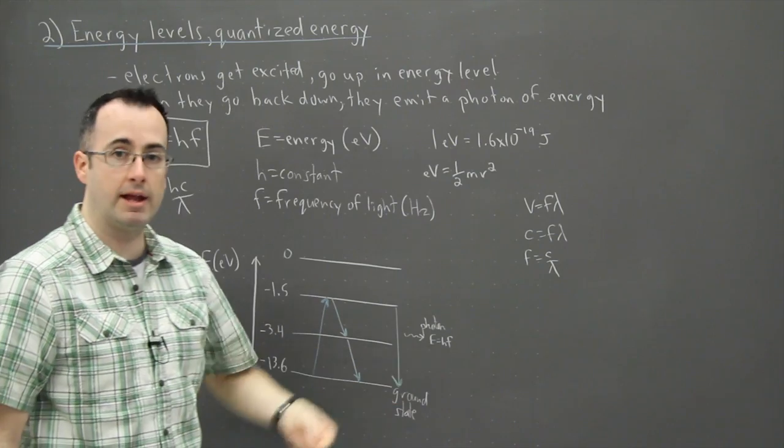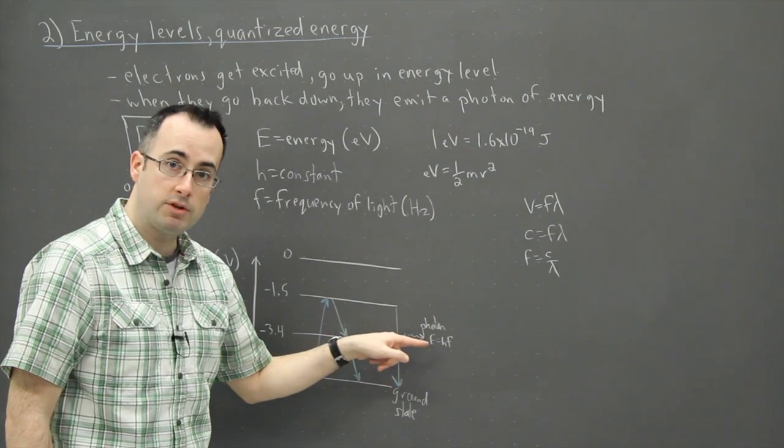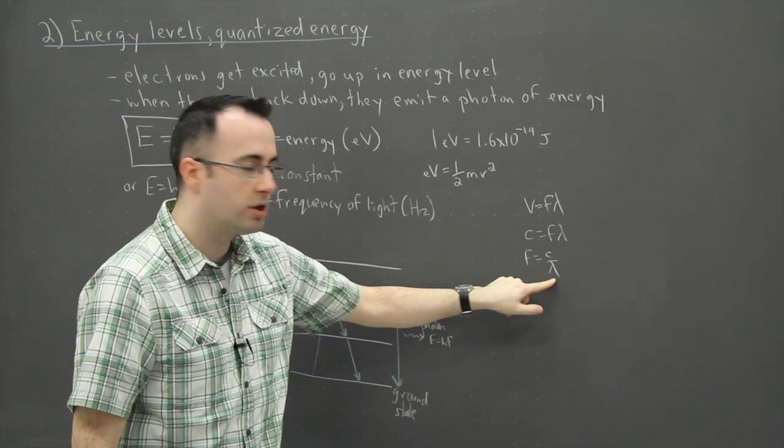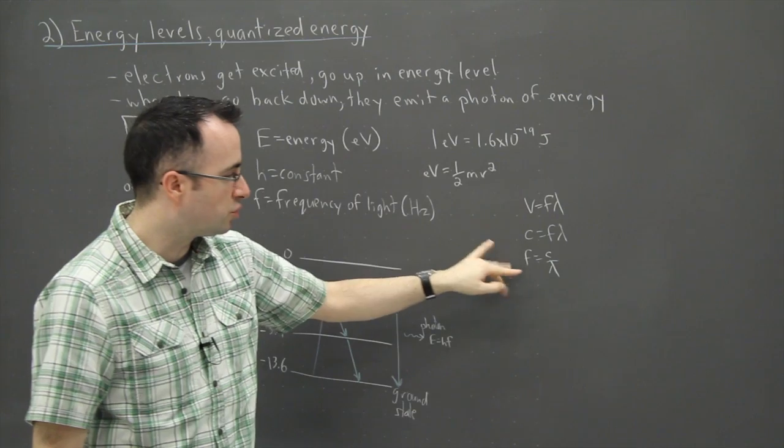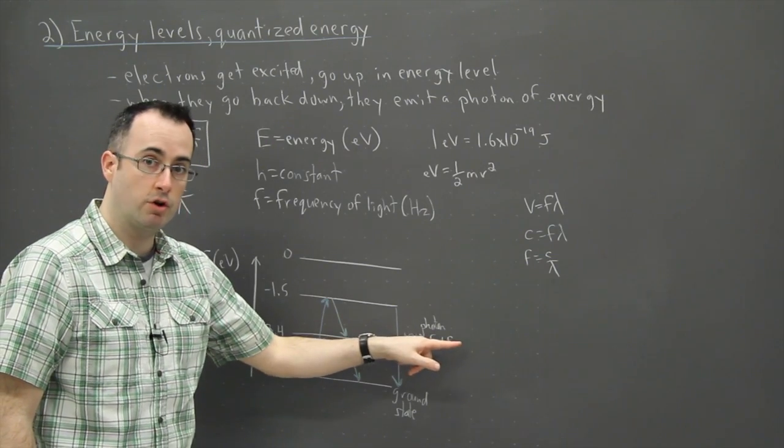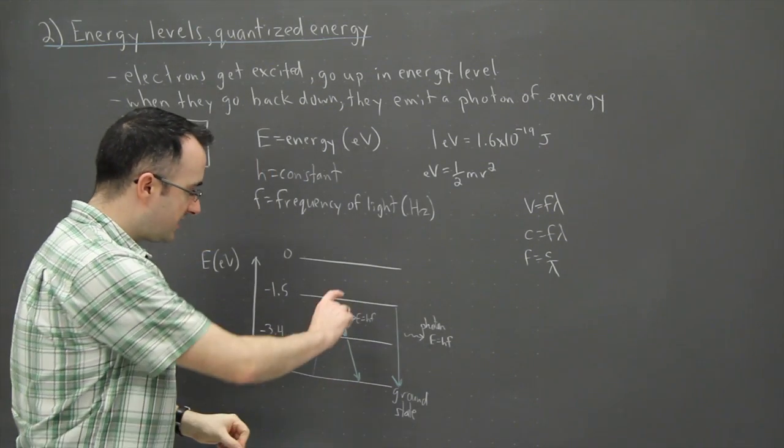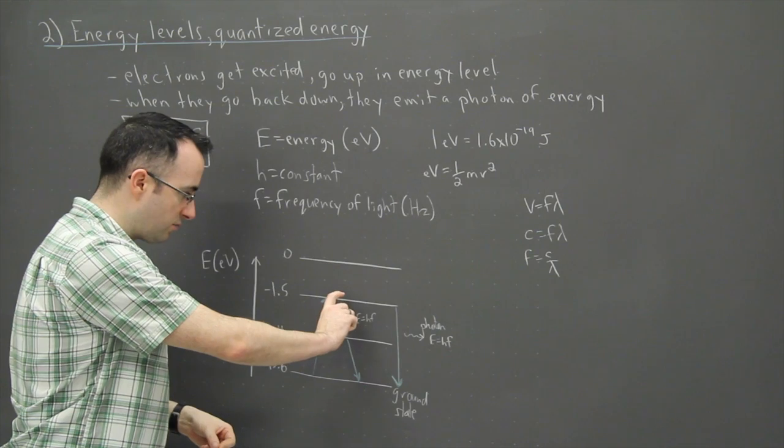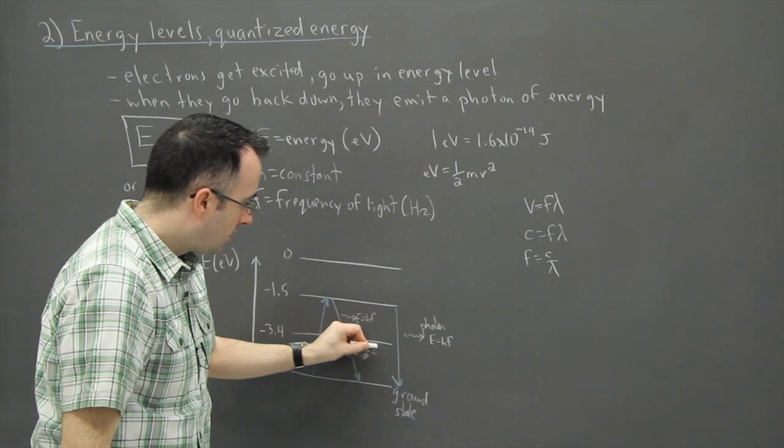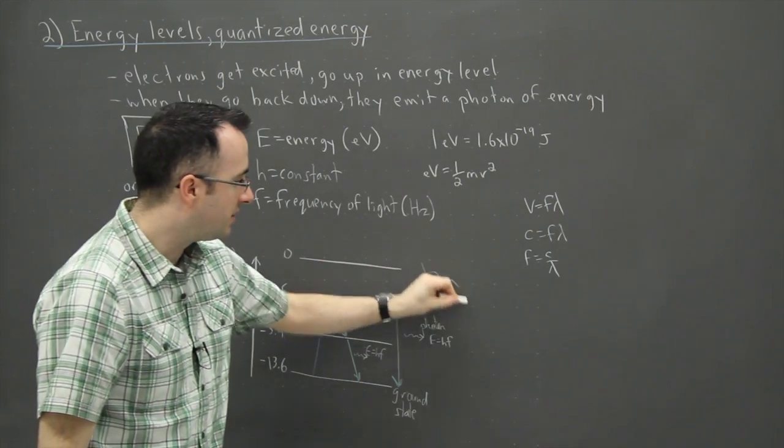So this energy transition from here to here corresponds to a photon of a very specific frequency—in other words, color. Remember frequency and color are related. Frequency and wavelength are sort of the same—it's just a factor of c different. So that means this one right here gives you one photon of a certain color. This one down here also gives you a photon, but that one has a different energy because this energy difference is different. 3.4 minus 1.5 is not the same as this one here. We also have a photon emitted here. We normally draw photons as squiggly lines like this—that's the physics convention.